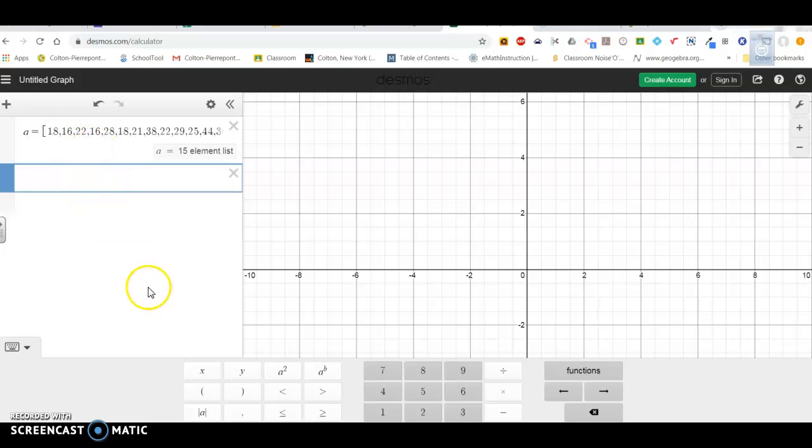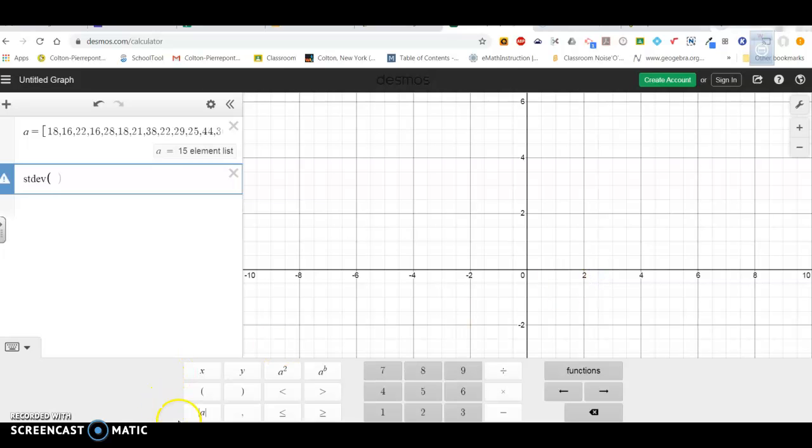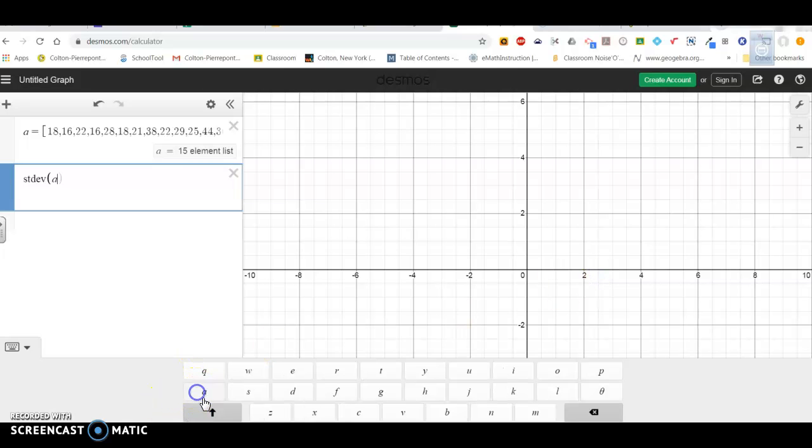If I want to do the sample standard deviation, I go over to functions here and I use the one that says STDEV. So standard deviation of A, and you can see it's going to be 9.1.